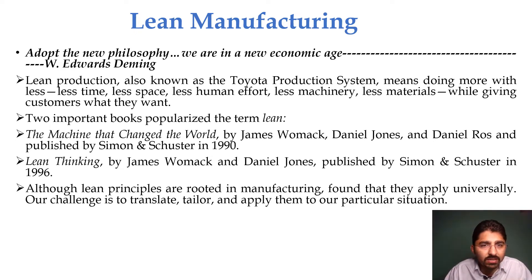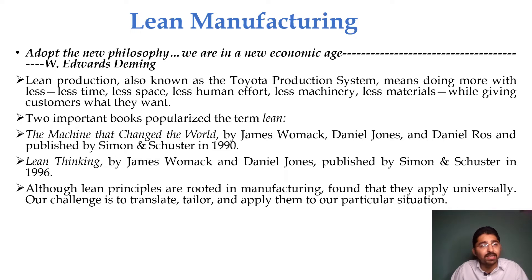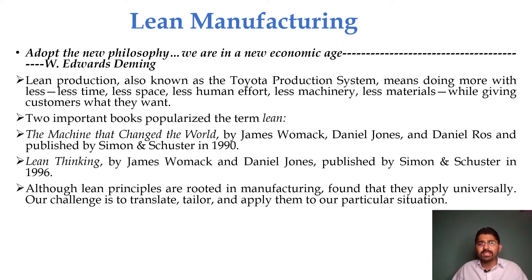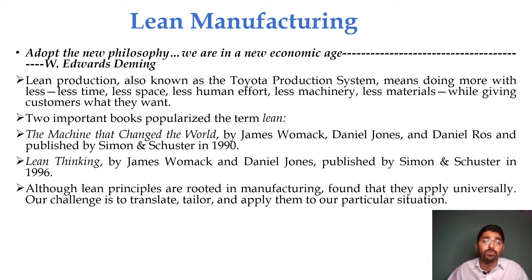The first book is 'The Machine That Changed the World' by James Womack, Daniel Jones, and Daniel Roos, published by Simon & Schuster in 1990. The second book is 'Lean Thinking' by James Womack and Daniel Jones, published by Simon & Schuster in 1996. Although lean principles are rooted in manufacturing, they apply universally — not only to the production department but to any operations, whether in the beverage, farm, medical device, or food industry.